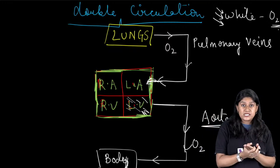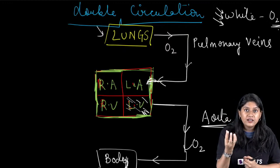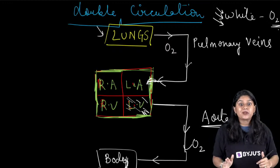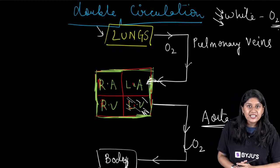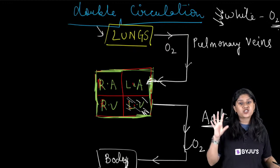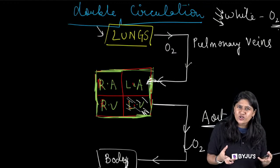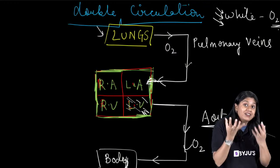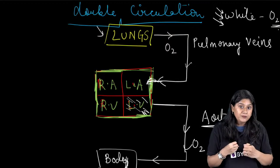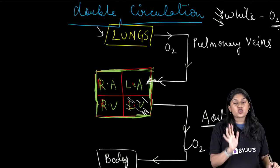To repeat: when we inhale, oxygen comes to our lungs. Exchange of gases occurs in the alveoli. The alveoli give oxygen to the blood vessels, which join and form the pulmonary vein. The pulmonary vein carries oxygen-rich blood to the left atrium. Left atrium receives the blood and gives it to the left ventricle. Left ventricle sends the blood to the different parts of the body through the aorta — the largest artery.